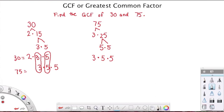And this isn't just 3 and 5. This is 3 times 5, and this is 3 times 5. So my greatest common factor, or GCF, would be 3 times 5, which is equal to 15. Because 2 times 15 will give me 30, and 5 times 15 will give me 75.